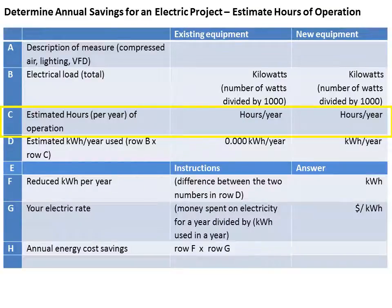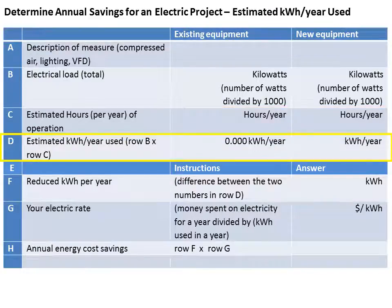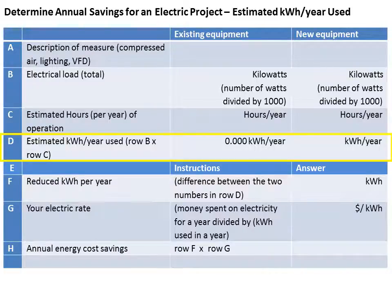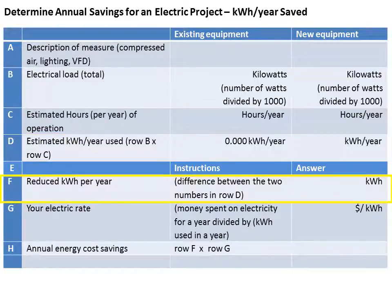Next, estimate the number of hours per year the existing equipment is being operated and the number of hours the new equipment will be operated. For example, your equipment may be used around the clock for six days every week, or you may only use it for eight hours per day five days per week. Then multiply the electrical load of the equipment in row B by the estimated hours of operation in row C. Do this for both the existing and new equipment to get the estimated kilowatt hours per year for each. Now determine your reduced kilowatt hours per year by figuring the difference between the numbers in row D.